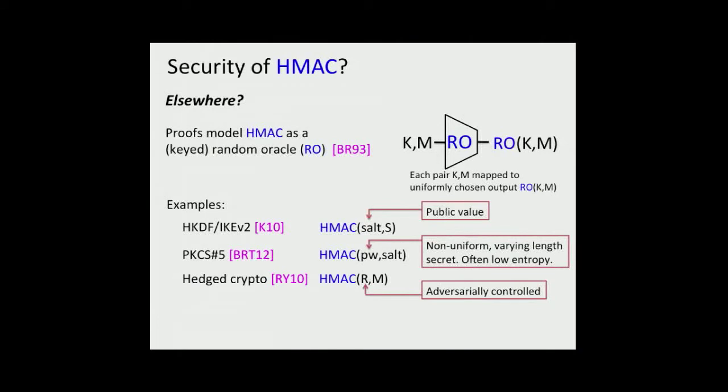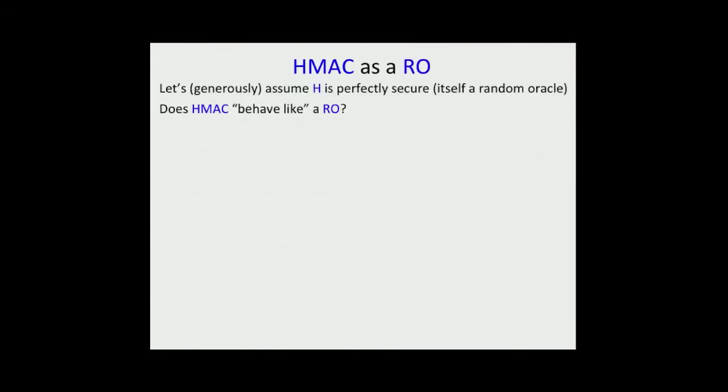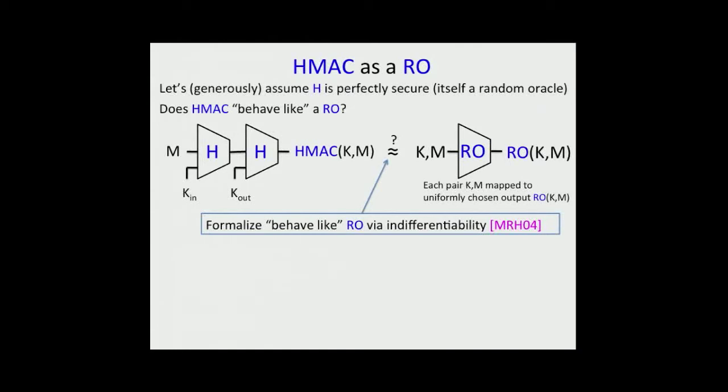In terms of security for these applications of HMAC, when we have a key that is a secret uniform bit string, then we can appeal to some of the well-known results about HMAC being a good pseudorandom function. There's also some work showing that in some settings, if you have a high entropy secret input, then HMAC is a good randomness extractor. But these standard model results don't work for all of the applications of HMAC. In particular, we see that in the literature and implicitly in practice, HMAC is being assumed or modeled as a keyed random oracle in the sense of Bellare-Rogaway 1993. This brings us to our main motivating question: does HMAC really behave like a random oracle?